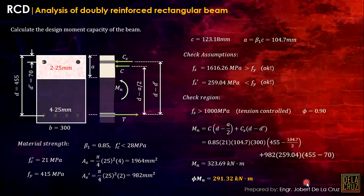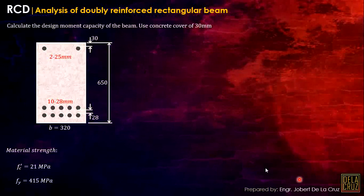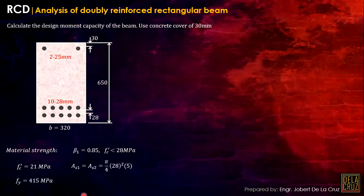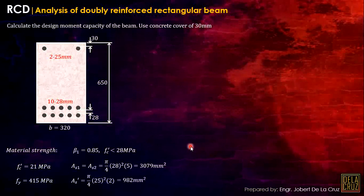Now for another sample problem. Here I have drawn two lines of tension bars. So what do we do? We still calculate beta1. We have As1 and As2. Since both lines have 5 bars with 28mm diameter, As1 = As2 = (π/4)(28²)(5). We get this value and As1 = As2 = 3079 mm² — you'll see why I separated them shortly.